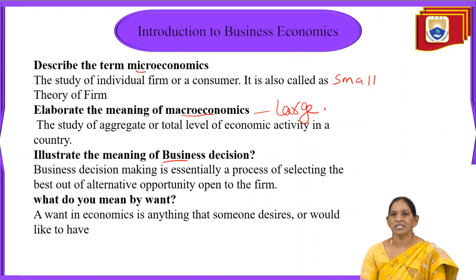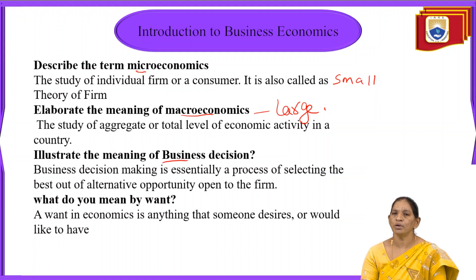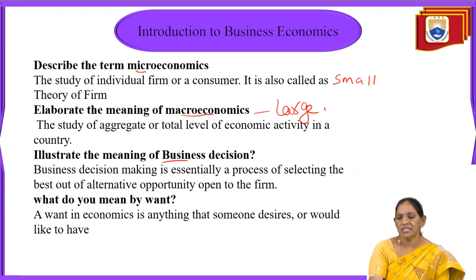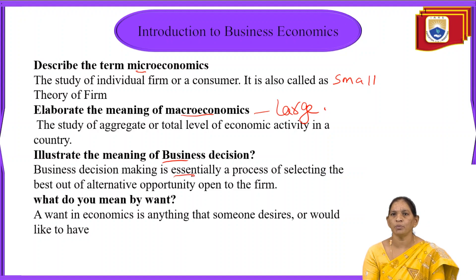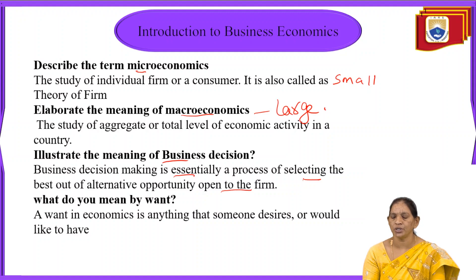Next, business decision making. Business decision making is essentially a process of selecting the best of alternative opportunities open to the firm. A decision is made when we have a number of alternatives and we are able to decide among them. In business, it is a required process in every organization because it involves selecting the best alternative opportunity available to the firm.